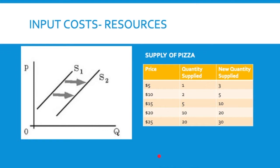If resources change — that's another input cost, the ingredients: tomato sauce, cheese, wheat. If those prices were to go down and supplies were cheaper, then I'd be willing to produce more at every price. Instead of producing one pizza at $5, I'd be willing to produce three. Instead of two, I'd produce five, because I'll be making more profits as the price of ingredients goes down. It's worth my time to spend longer making 30 pizzas rather than 20.